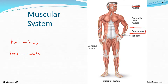What connects bone to muscle? Not joints, not cartilage — tendons. Those strings you can see in your arm and wrist are tendons. Ligaments connect bone to bone, and tendons connect bone to muscle.